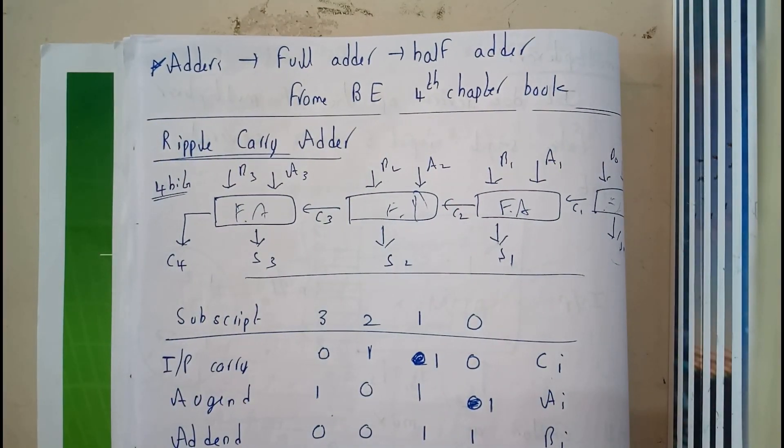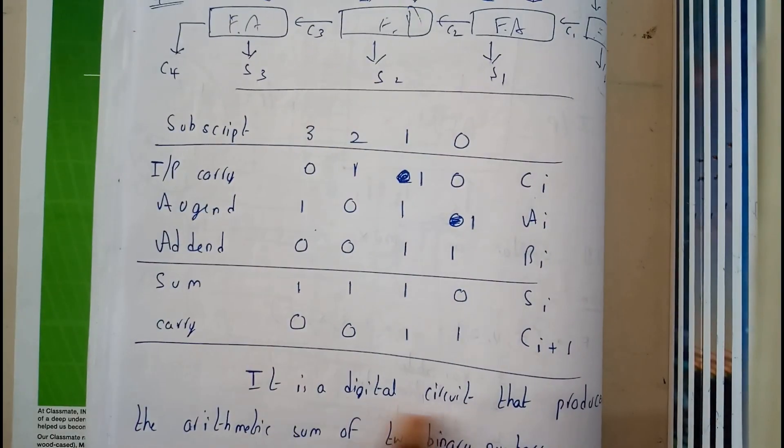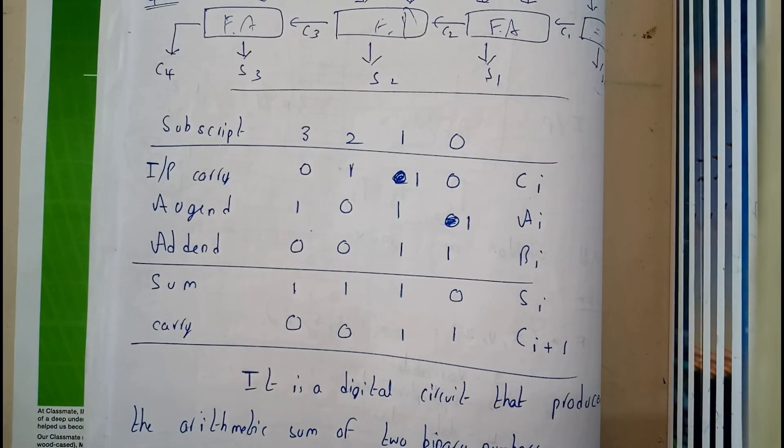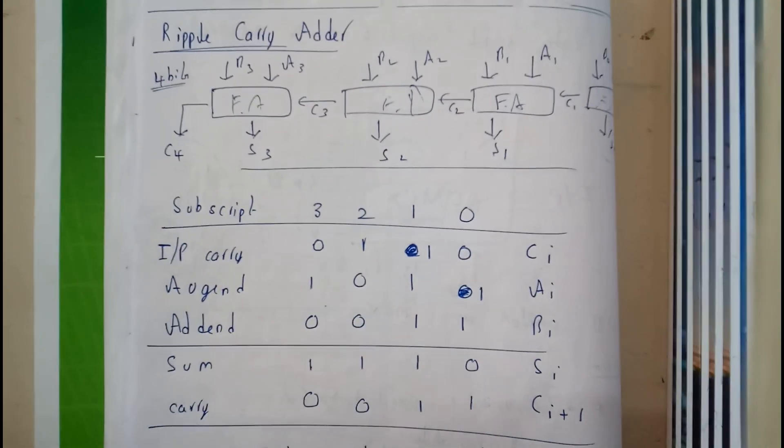So that is what the Ripple Carry Adder is. It is also similar to Parallel Adder, it is a digital circuit that produces the automatic sum of two binary numbers. So now I hope everyone is clear with this.